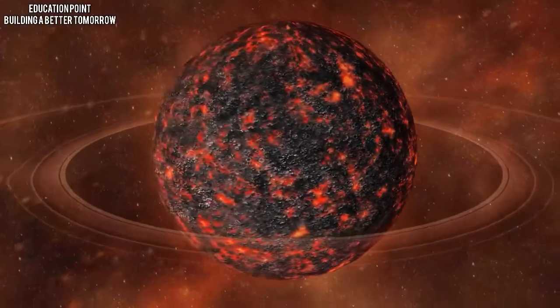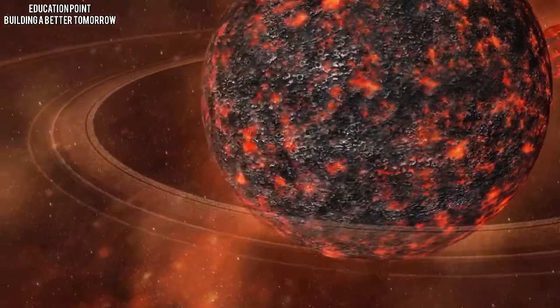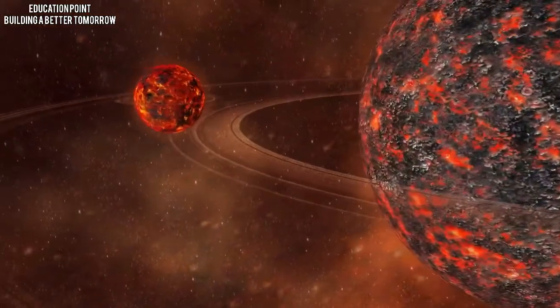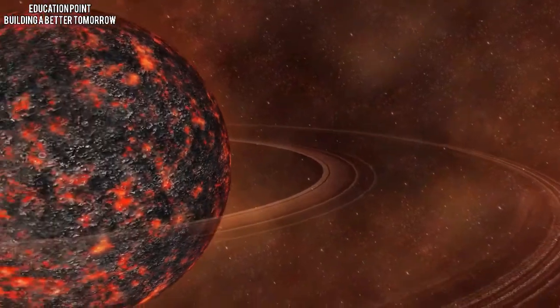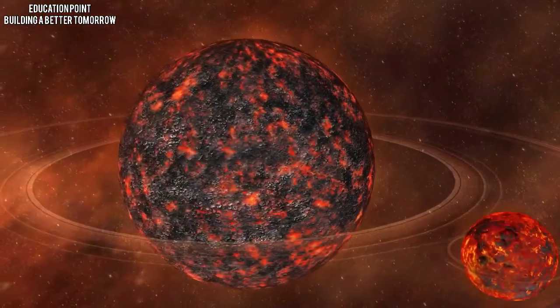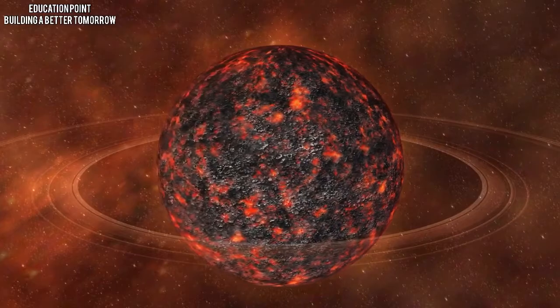After the dissolution of the ring, the Moon became a glowing hot celestial body orbiting 25,000 kilometers above the Earth. During this period, the Moon still had volcanoes, lava flows, and its own magnetic field.